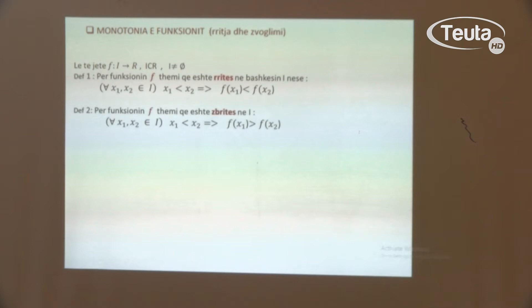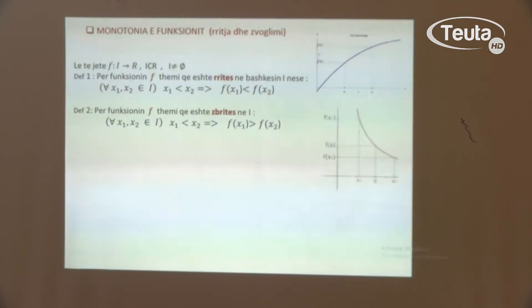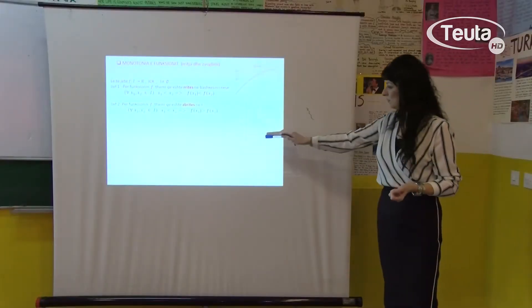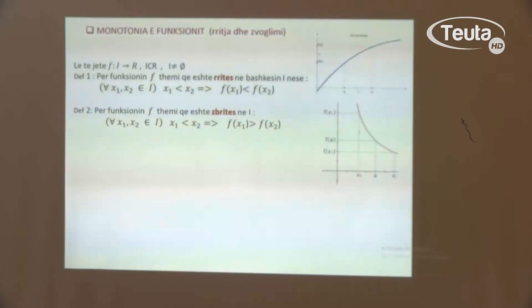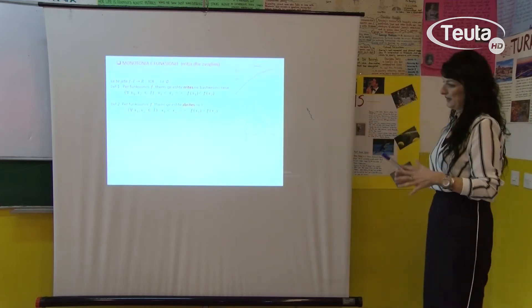Tani, definicioni i dytë thotë: për funksionin f themi që është zbritës në intervalin I, në qoftëse për çdo x₁ dhe x₂ nga intervali I, kur x₁ < x₂, vlen që f(x₁) > f(x₂). Këtu kemi grafikun e funksionit zbritës. Marrim dy vlerat e argumentit x₁ dhe x₂, pasqyrojmë x₁ dhe fitojmë f(x₁), pasqyrojmë x₂ dhe kemi f(x₂). Shikoni: keni x₁ < x₂, kurse f(x₁) > f(x₂). Ky grafik është grafik zbritës.